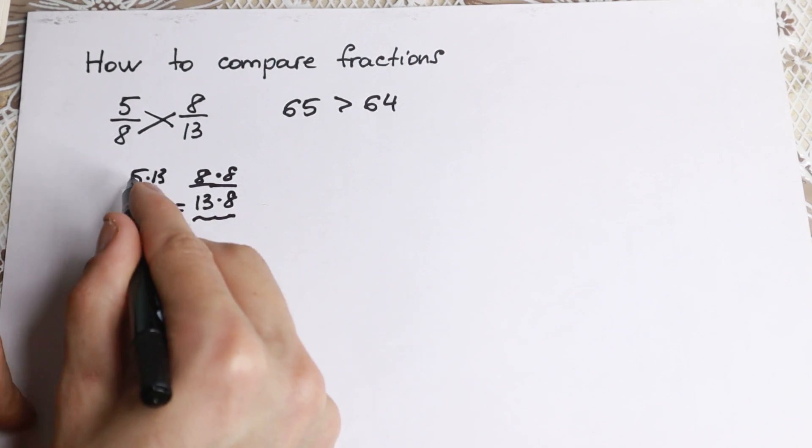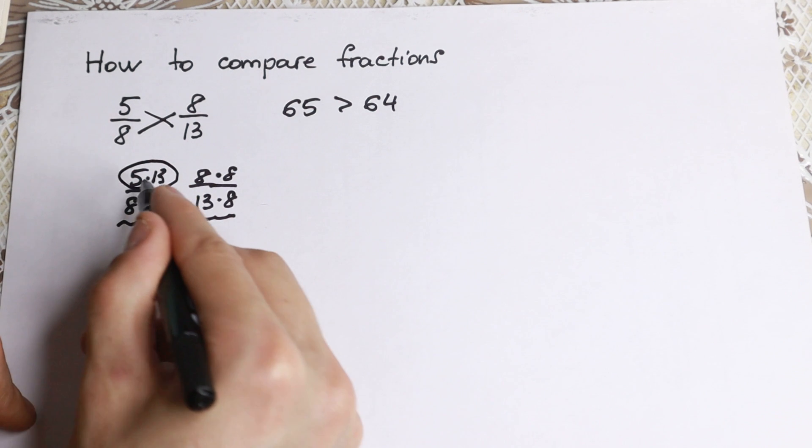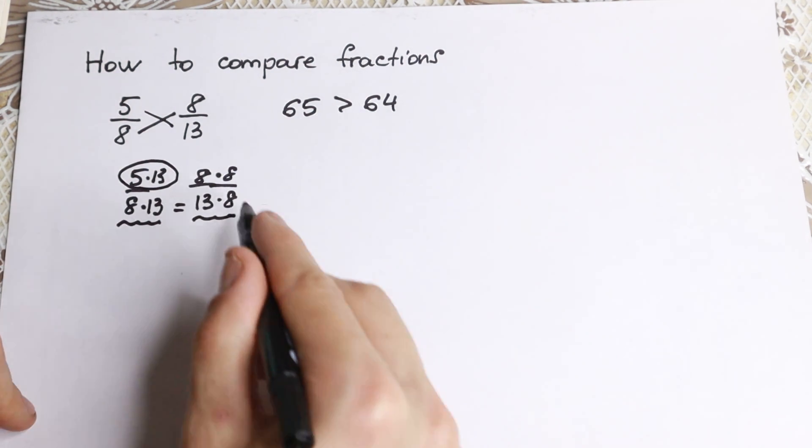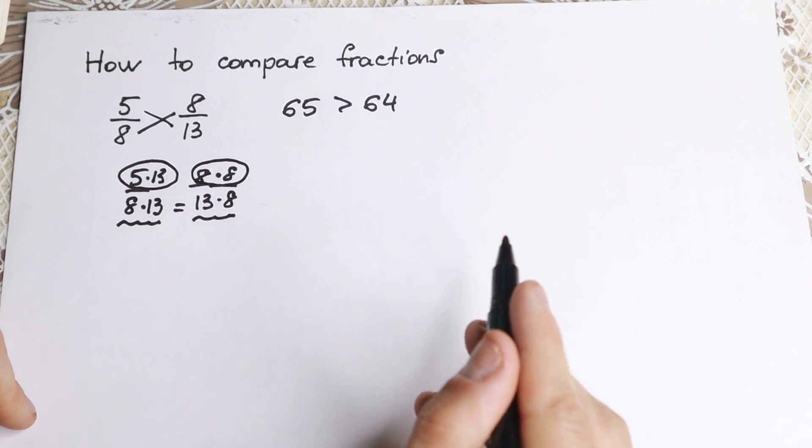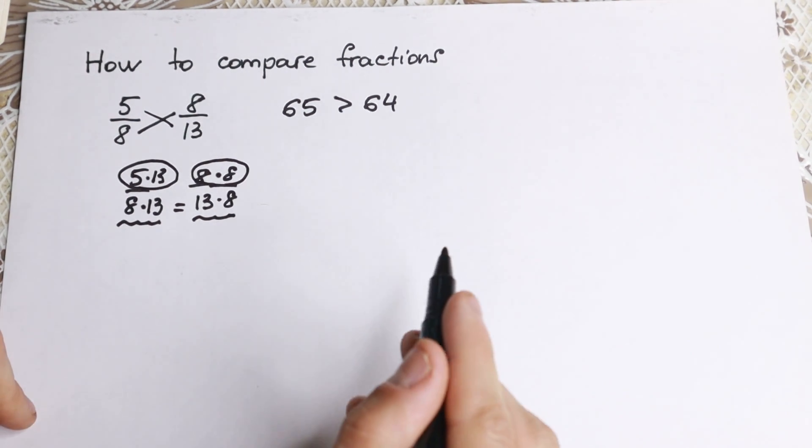This is the same, but in our numerator we have 5 times 13 which equals 65, and 8 times 8 which equals 64. So I hope you understand this trick. We just use cross-multiplying.